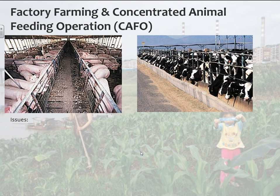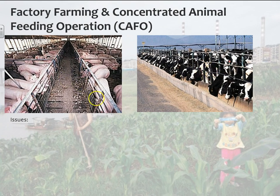Moving on to factory farming and concentrated animal feeding operations, or CAFOs. This is basically when you have a lot of animals that you're growing in a very small area of land. You can see they're very crowded. Cows are not naturally going to congregate like this. Pigs are not naturally going to live in conditions of this type. In a way, it's monoculture for raising animals.